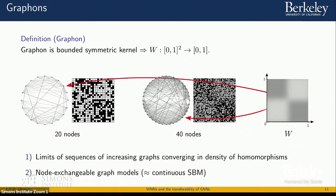Graphons are also interesting because we can reverse that property: we can look at graphons as models for generating graphs — essentially continuous stochastic block models. By sampling graphs from the graphon, we obtain graphs that belong to a sequence sharing the property of converging in density of homomorphism — graphs that look the same in the sense of having similar structural properties.